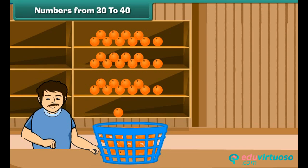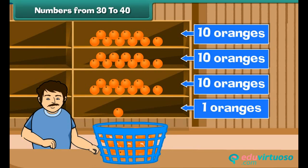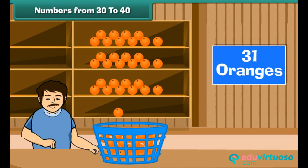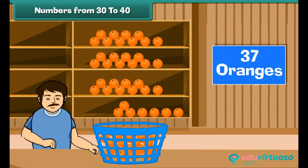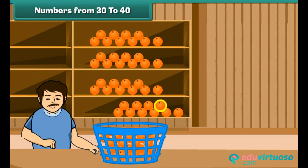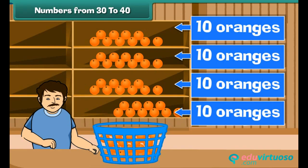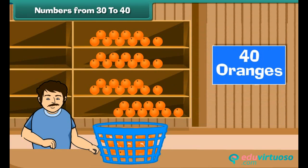Let us now pick up one orange from the basket and arrange it on the fourth shelf. Now we have three tens and a one, which makes 31 oranges. Keep adding one orange at a time to the fourth shelf. After adding the last orange, there are four groups of tens, which make 40.